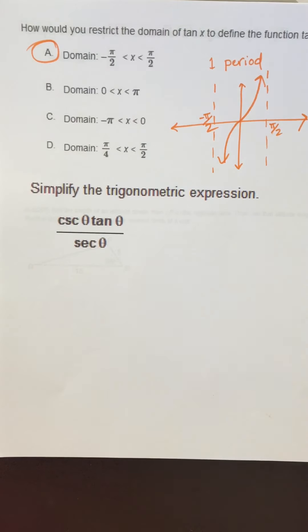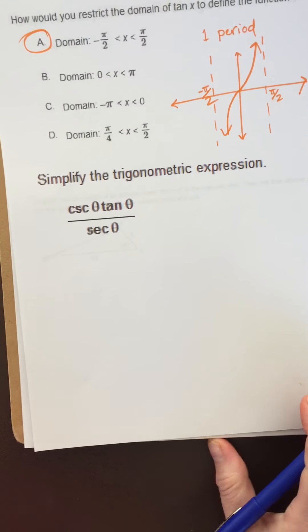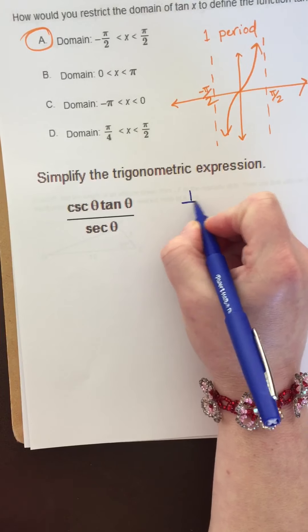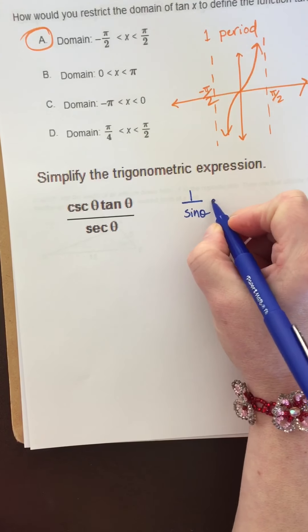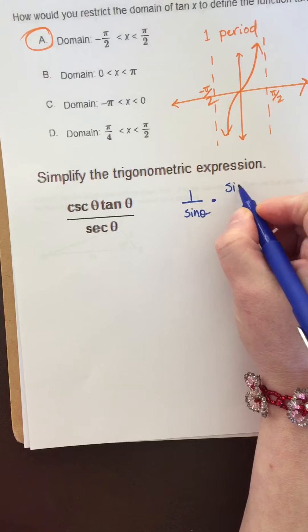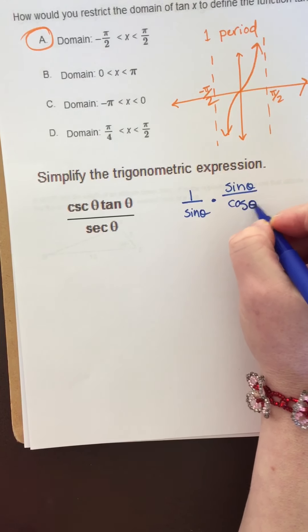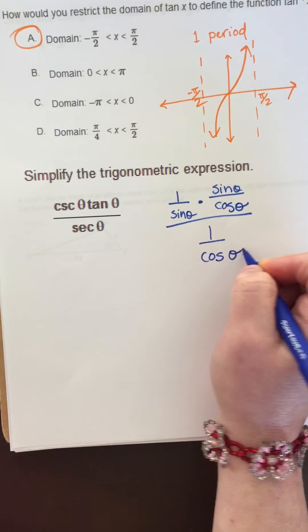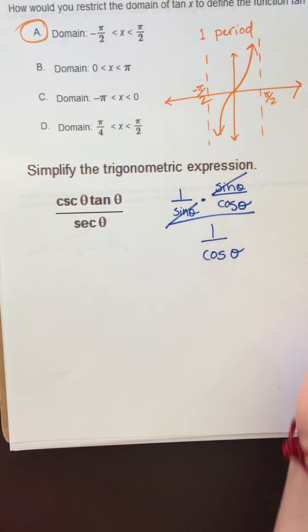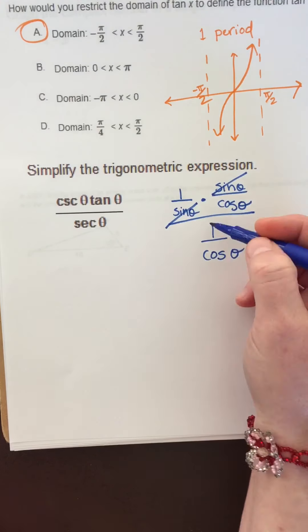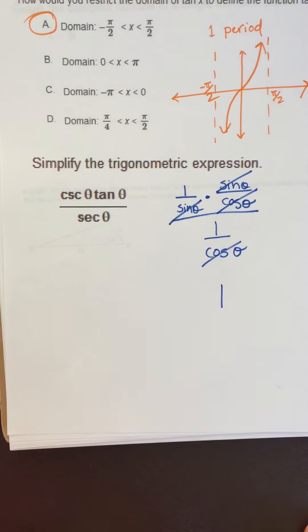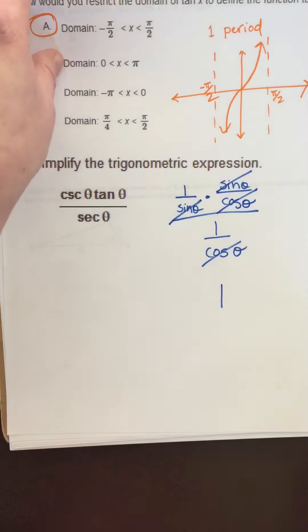It says to simplify the trig expression csc 0 tan 0 over sec 0. Cosecant is 1 over sine. I'm just going to change everything to sine and cosine. Tangent is sine over cosine, and secant is 1 over cosine. Sine in the denominator, sine in the numerator, you've got 1 over cosine over 1 over cosine, you can cancel those out. That would just be 1.